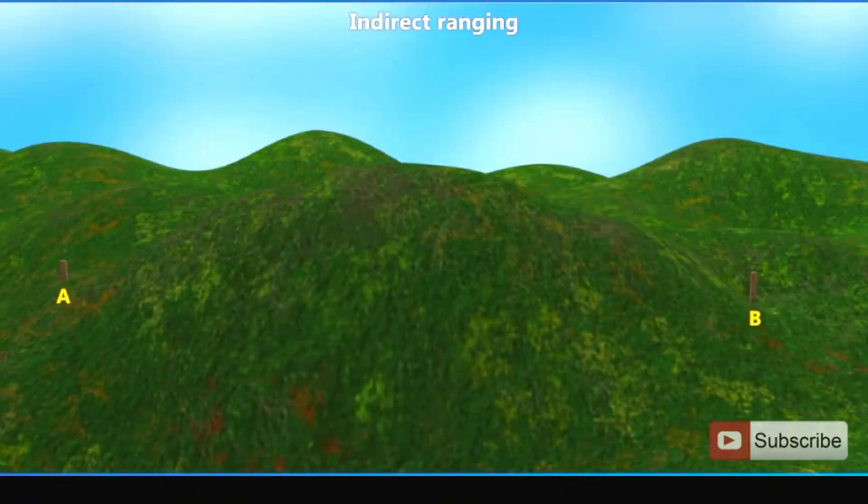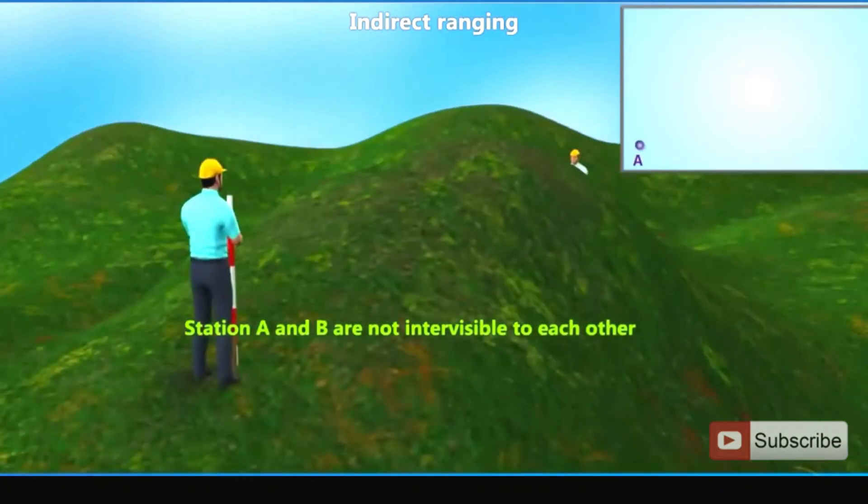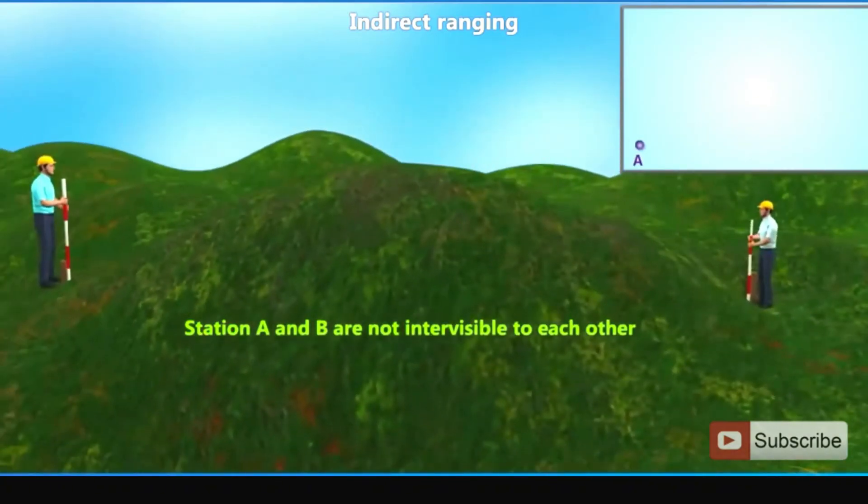Let us fix station A and station B. Station A and B are not inter-visible to each other due to intervening high ground.